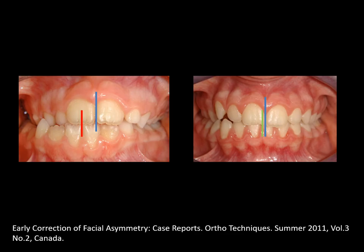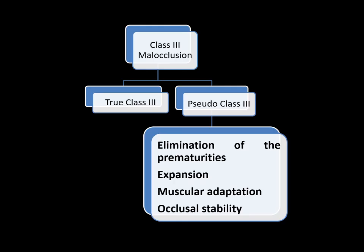In the second part of this webinar, we overviewed the classification of Class 3 occlusion and revised the treatment options for pseudo Class 3. In summary, the main goals for pseudo Class 3 treatment are: elimination of prematurities, expansion, waiting for muscular adaptation, and achieving occlusal stability.